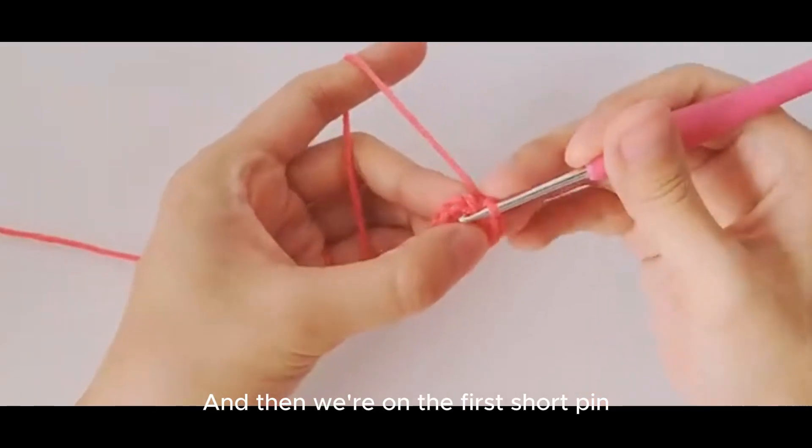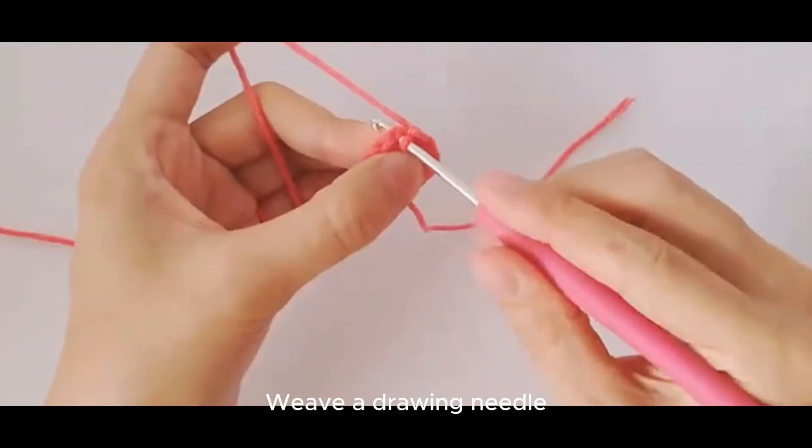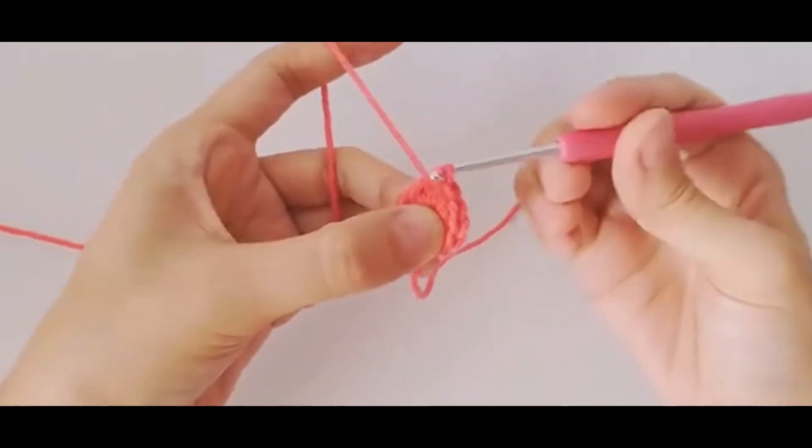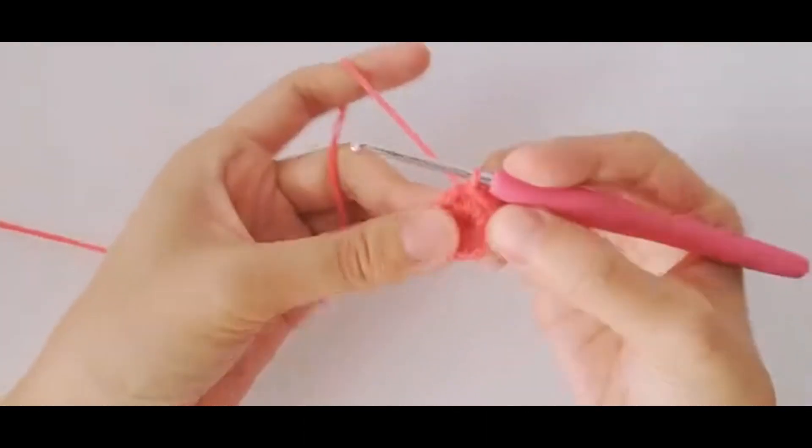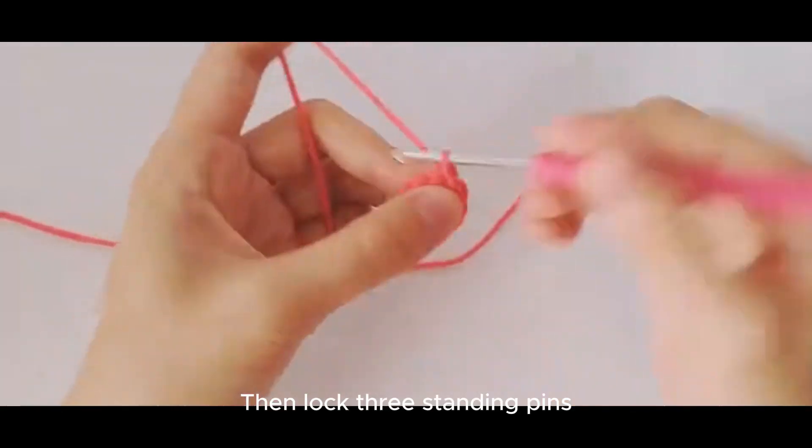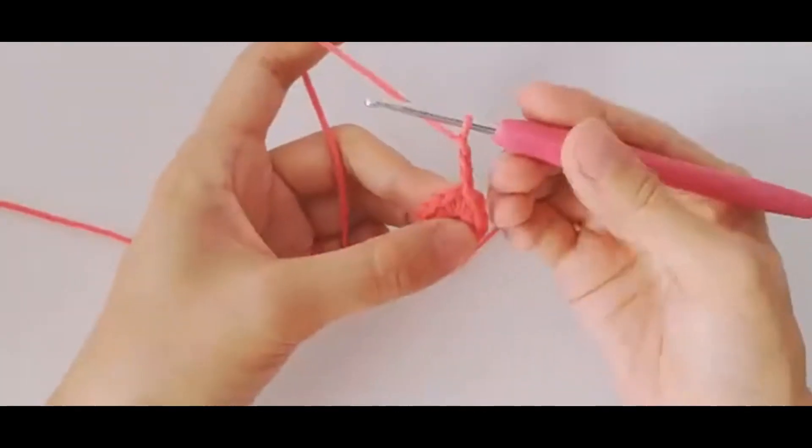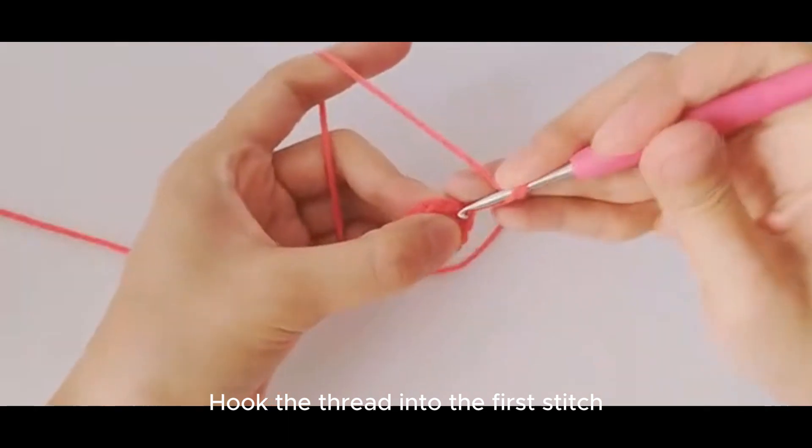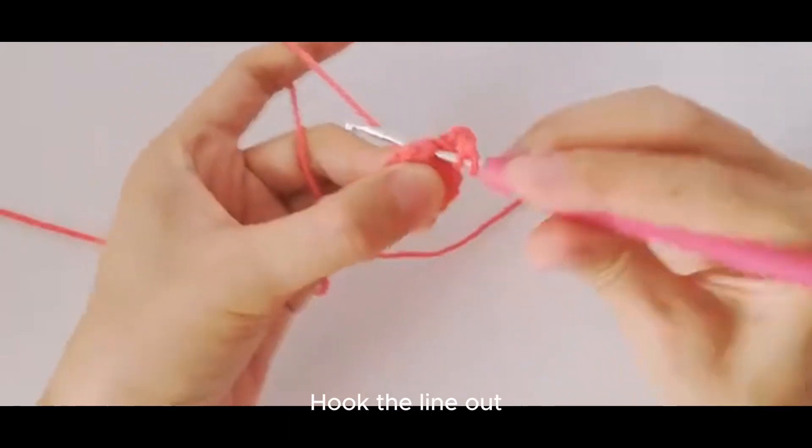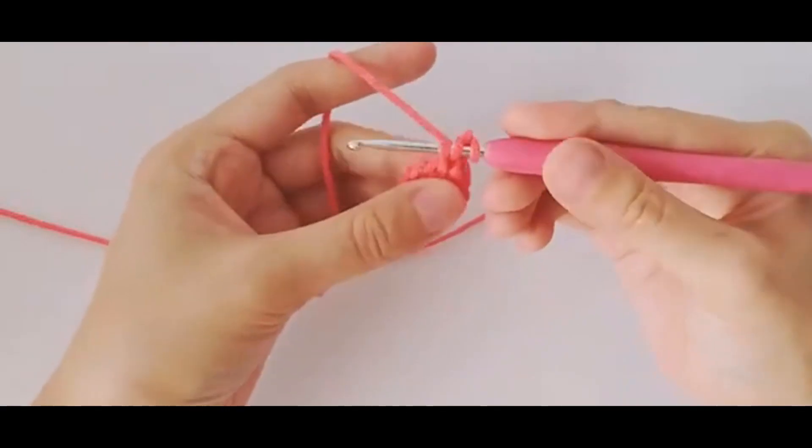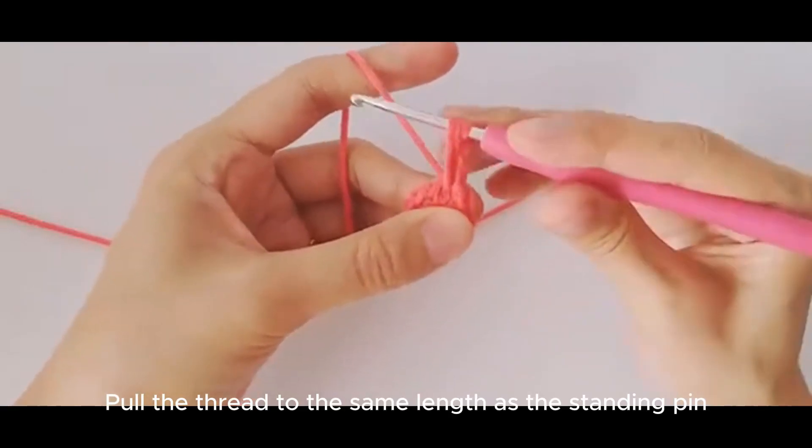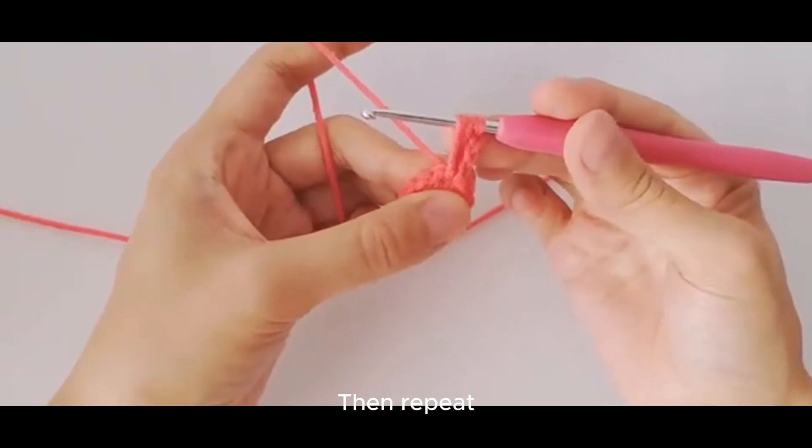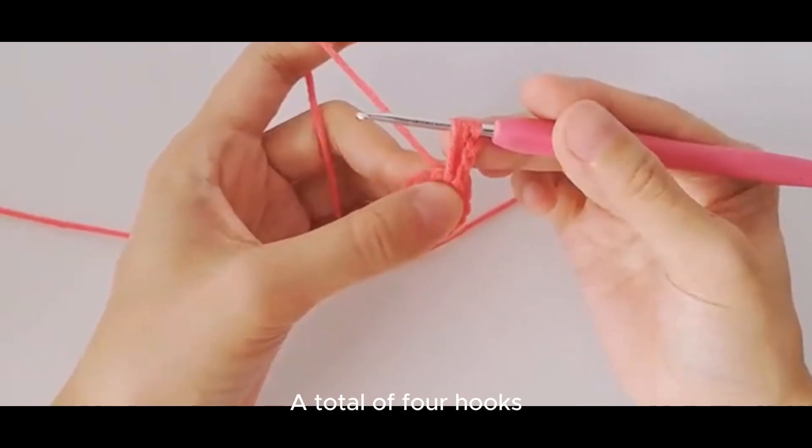And then we're on the first short pin with a drawing needle. Then lock three standing pins. Hook the thread into the first stitch. Hook the line out. Pull the thread to the same length as the standing pin. Then repeat. A total of four hooks.